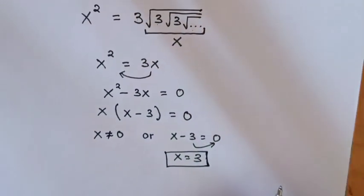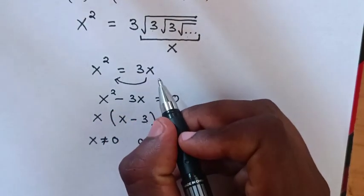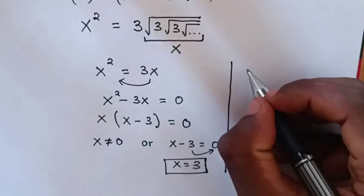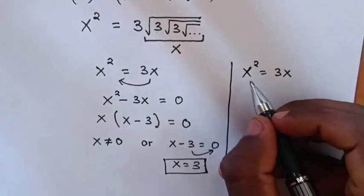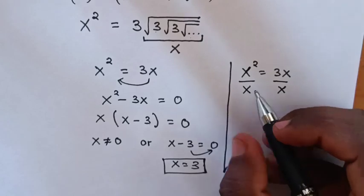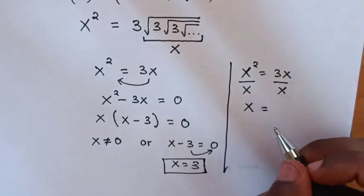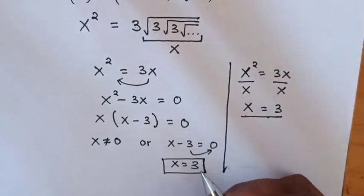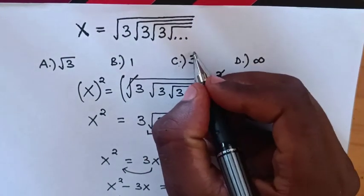Or you can solve in another way. From x squared is equal to 3x, we divide by x on both sides. So x squared divided by x is x, is equal to 3x divided by x, which is 3. So here you can see the value of x is 3, therefore you can choose the answer here is C.